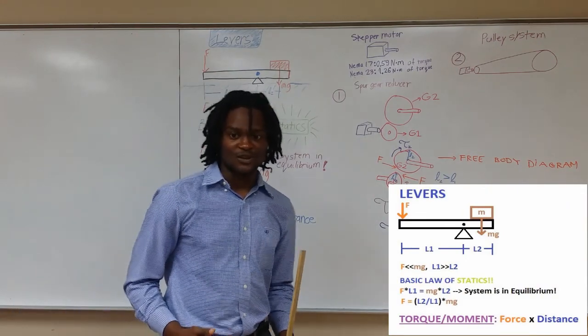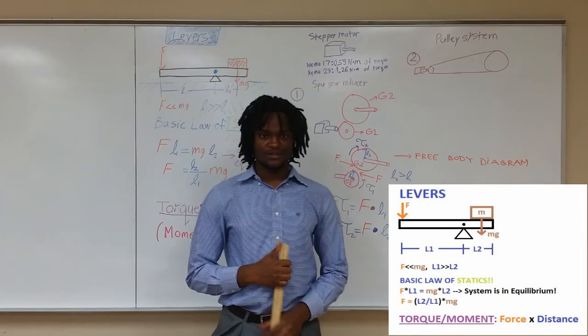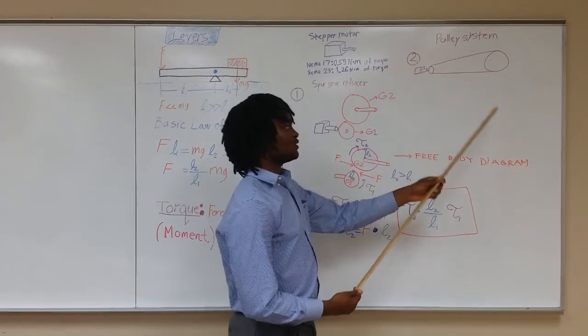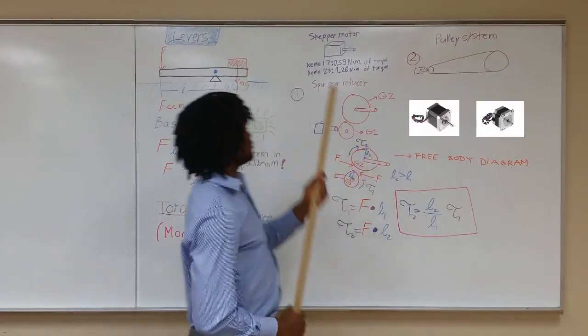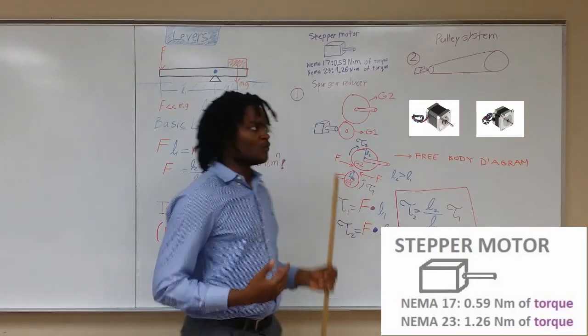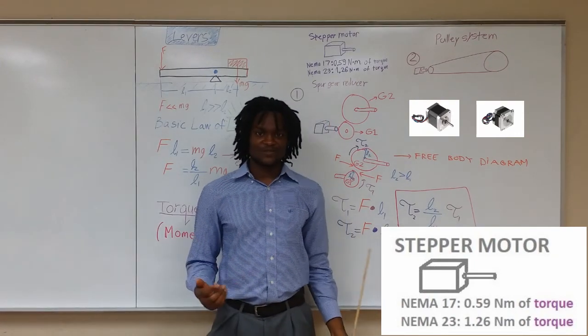So now that we understand the concept of torque, let's discuss the methods for amplifying the torque. Here we have two separate motors, the NEMA 17 and the NEMA 23. The NEMA 17 has a torque of about 0.6 Nm, while the NEMA 23 has a torque of about 1.26 Nm. So what's the physical explanation for the values of torque?